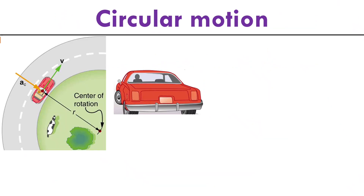Consider a car moving in a circle with constant speed. If we do a free body diagram on this car, we know the car is under normal force and also under gravity. We also know that the car may need some friction for it to turn.